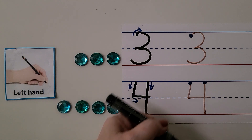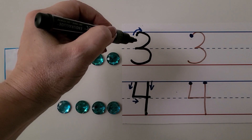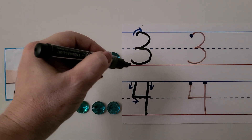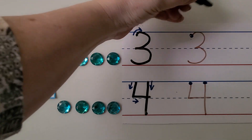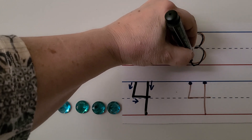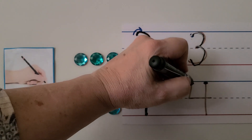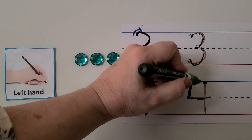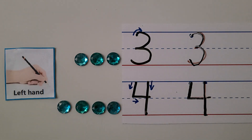For the left-handed students, the ones who write like me, we make the three the same way. We start here and we come around to the middle and around again and curl up a little bit. We start here at the dot, we come around and around. For the four, we can start here. We come down to the middle and go across and then we come here and go straight down. Four.